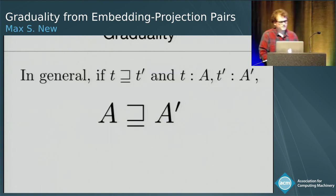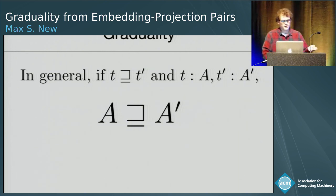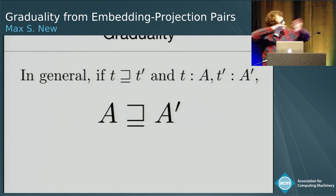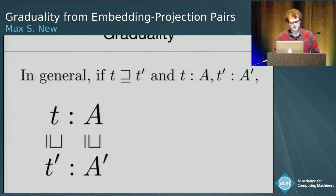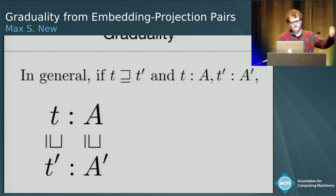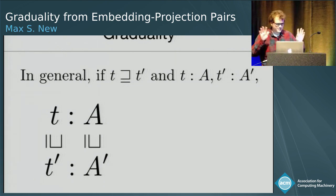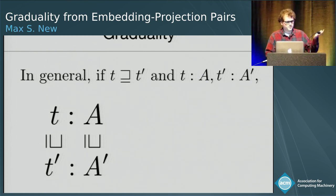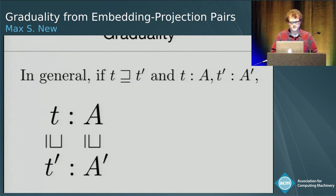We present a logical relation that is sound for contextual error approximation — it's a little different from previous logical relations because those are mostly based on other notions of approximation. With this contextual error ordering, we can immediately define a special case of the graduality theorem: when T is less precise than T prime and they have the same type A, the graduality theorem just says they're in the contextual ordering. But more generally, if T is less precise than T prime and they have two different types A and A prime, all we know is that there's an ordering between the types.